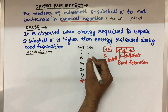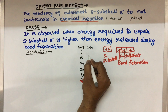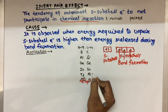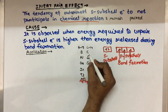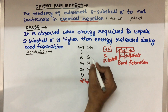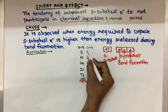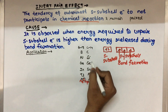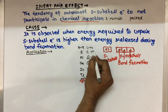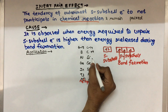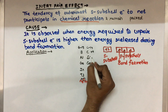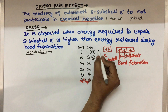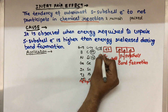Similarly, in group 14 — carbon, silicon, germanium, tin, lead — carbon can show a maximum oxidation state of +4, and if s sub-shell electrons do not participate in the reaction, the element can show +2 oxidation state.